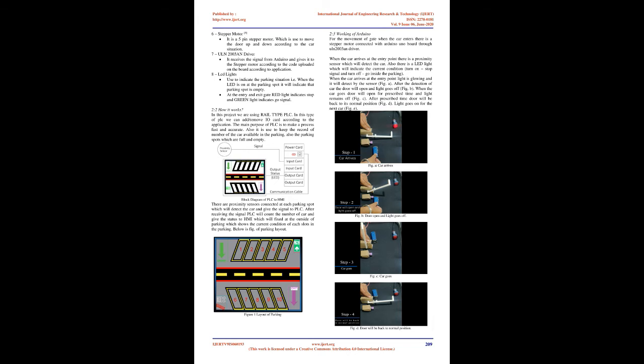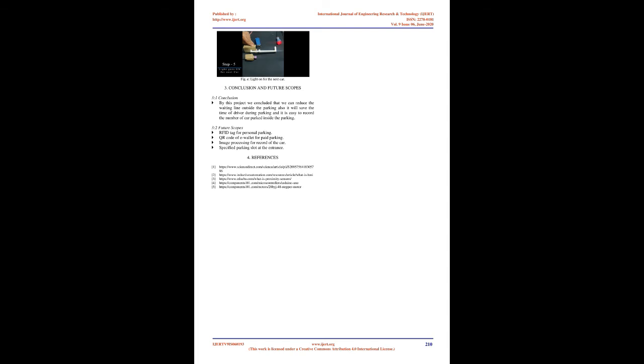Section 2.2 — How It Works: This project uses a rail type PLC, where IO cards can be added or removed according to the application. The main purpose of the PLC is to make the process fast and accurate, keep a record of the number of cars in the parking, and track which spots are full or empty. Proximity sensors connected at each parking spot detect the car and send a signal to the PLC, which counts the cars and sends status to the HMI fixed outside the parking, showing the current condition of each slot.